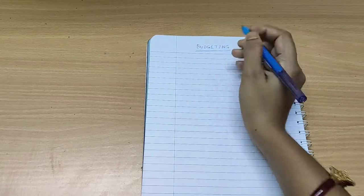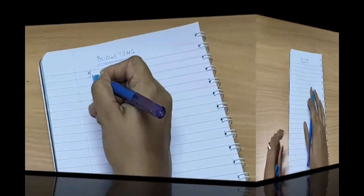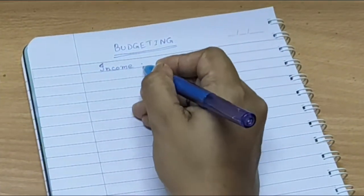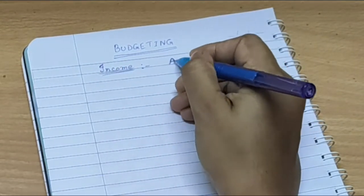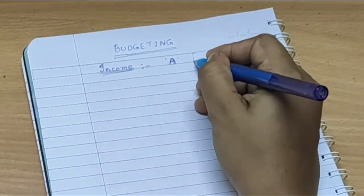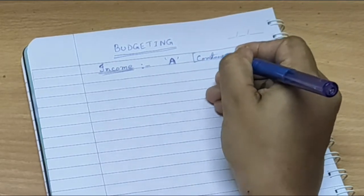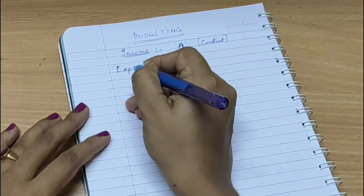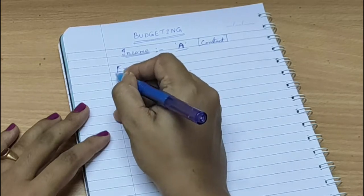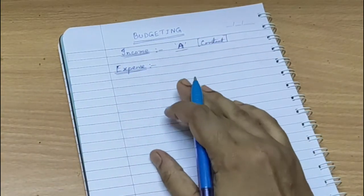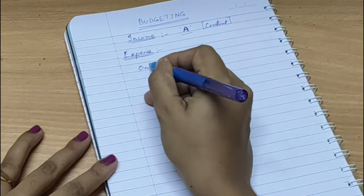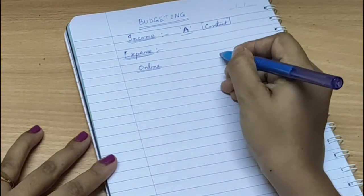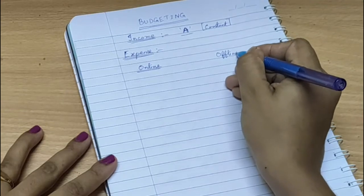As you start to do your monthly budget planning, first put your monthly income at the top, which is almost constant. Then start listing down your expenses for the whole month. I have divided them into online and offline category as per my convenience. Take your own time and list down all expenses in both categories.